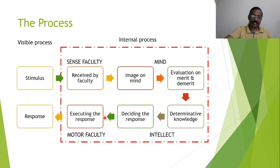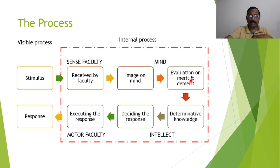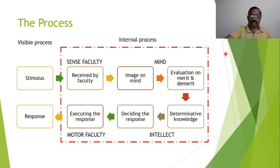The response only will be visible outside. The response of person A will be different from person B because this process is personalized through ahamkara — ahamkara is personal, and my ahamkara differs from another person's. So responses are personalized. This can be called the primary process inside. If this process is absent entirely, the response can be called a reflex — stimulus received, response given, uniformly, because there is no internal process.